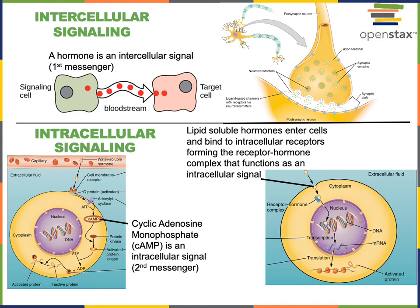An example of an intracellular signal is cyclic AMP. Cyclic AMP, or cyclic adenosine monophosphate, is produced from ATP by the enzyme adenylyl cyclase. So a hormone can stimulate a receptor on the surface of a cell, and that receptor can then activate the enzyme adenylyl cyclase to produce cyclic AMP as a second messenger that will serve as a chemical signal inside the cell to regulate the functions of that cell.